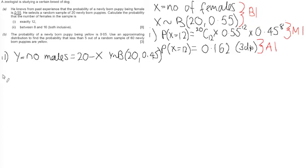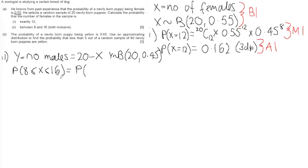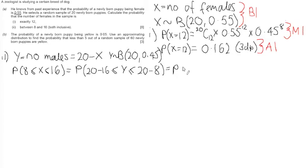We state the distribution for the males and work out the probability of getting the right number of males so that the females lies between 8 and 16. We can state that P(8 ≤ X ≤ 16) equals the probability that the males lie in the corresponding range. The lower bound for the males comes from the upper bound for the females: 20 − 16 = 4. The upper bound for the males comes from the lower bound for the females: 20 − 8 = 12. So we're looking to find the probability that Y lies between 4 and 12.